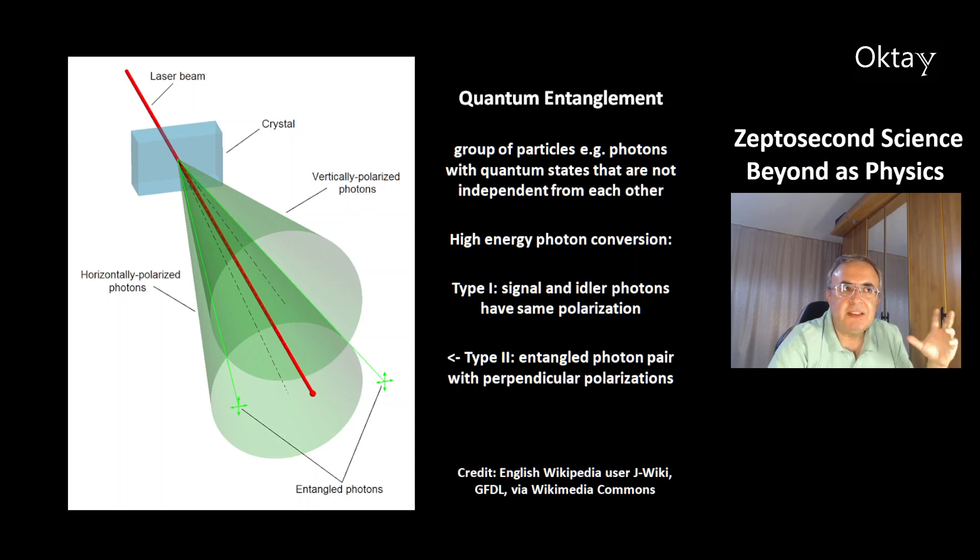And quantum entanglement means you have a group of particles, for example photons, and their properties are not independent from each other, their properties are dependent on each other. That's entanglement. And there are two types. Type 1 is the signal and idler photons with the same polarization. In this picture, this is type 2. These are entangled photons with perpendicular polarizations.